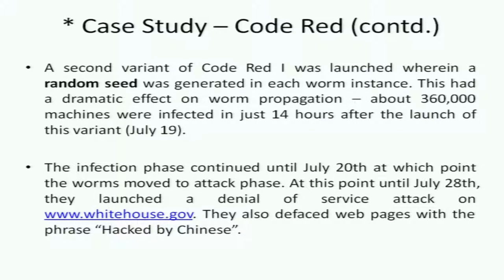The infection phase continued until July 20th, at which point the worms moved to the attack phase. From July 20th until July 28th, they launched a denial-of-service attack on the White House web page, www.whitehouse.gov, and defaced it with the phrase 'Hacked by Chinese.' Hundreds of thousands of machines were compromised. The worm writer deliberately chose IIS because he knew there were many hundreds of thousands of deployments around the world.